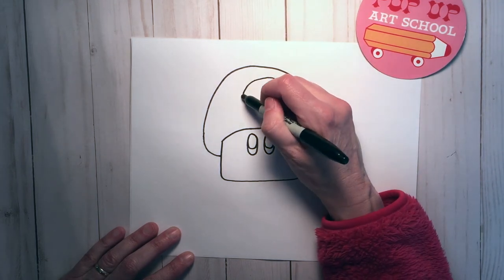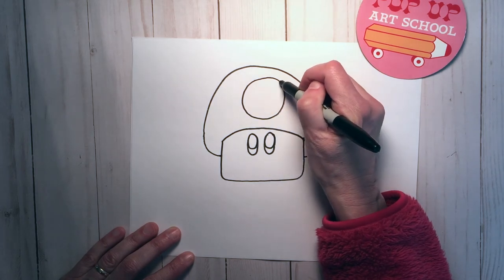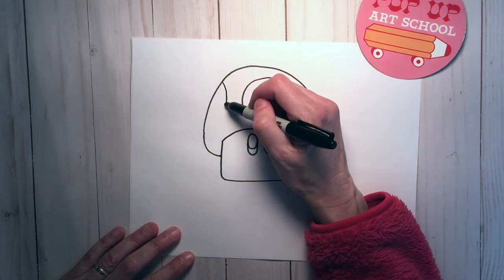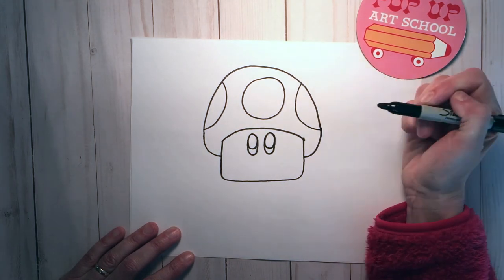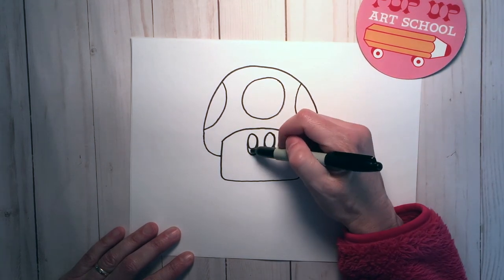In the very center a big circle and then on each side half circle. After that we're going to color in the bottom part of the eye.